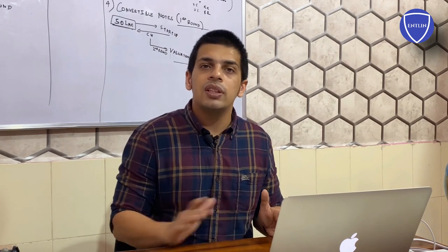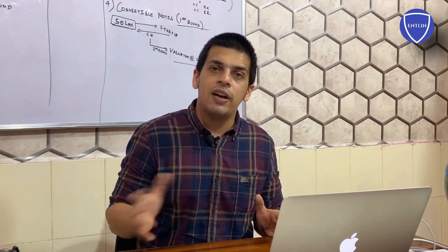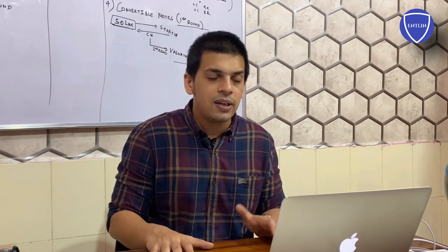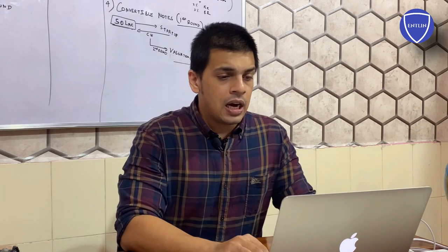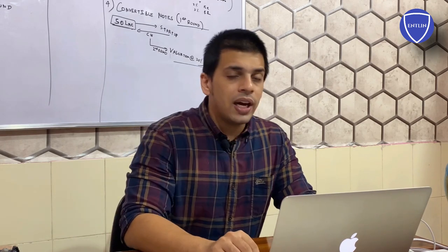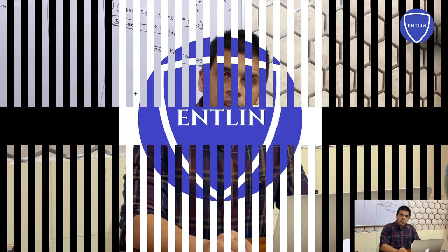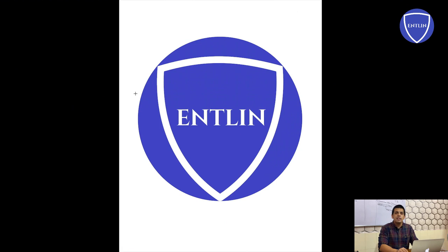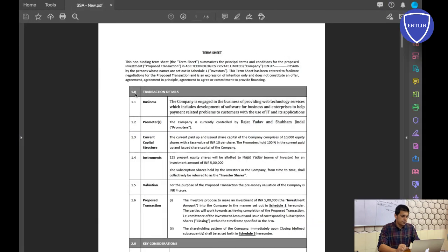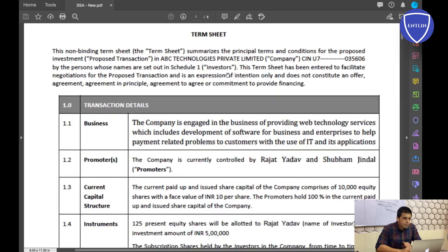Term sheet agreements can be around 50 pages, but term sheets themselves are usually smaller — ranging from 3 to 10 pages — and contain all the terms you've agreed on. Once you sign the term sheet, though it is not legally binding, it gives both the entrepreneur and investor the confidence that these terms are fixed. You can then proceed quickly toward executing the agreement and the final investment.